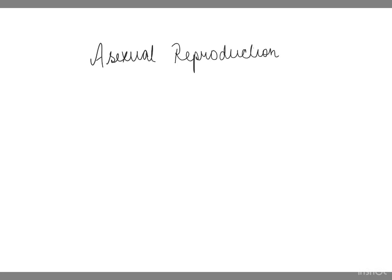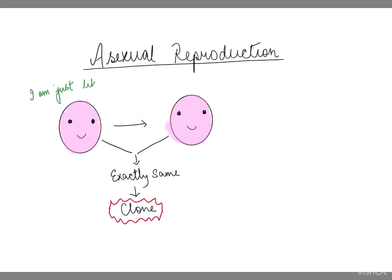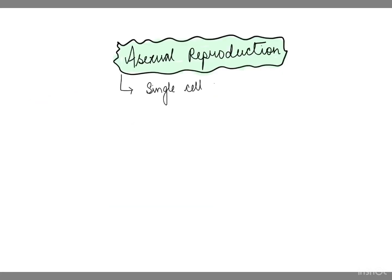In asexual reproduction, since there is only one parent producing offspring, the offspring are exact copies of the parent, called clones. Asexual reproduction is common in single-celled organisms, some plants, and simple animals.